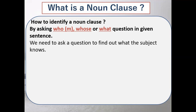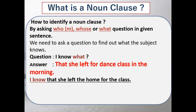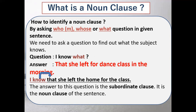For instance, we need to ask a question to find out what the subject knows. Here: 'I know' — know what? 'That she left for dance class in the morning.' You can see this clause is giving you the answer of 'what.' Who knows? The subject. What does the subject know? 'That she left the home for the class.' The answer to this question is the noun clause or dependent clause, and it is taking the position of the object.